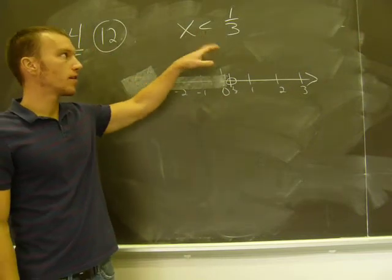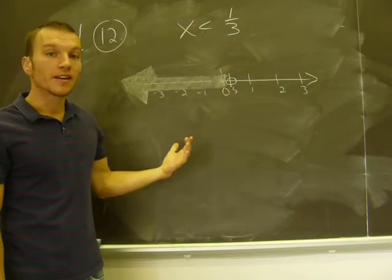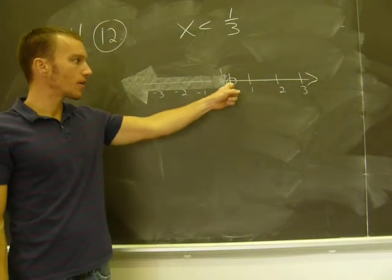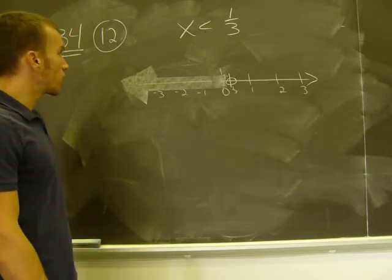Remember, these are not just one number for an answer. It's a whole set of answers, a set of solutions - everything less than 1 third. And that's indicated on my graph, everything back here.